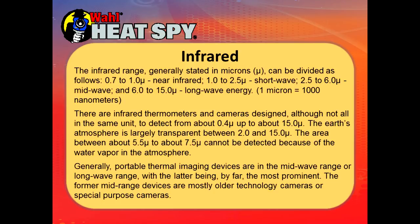Infrared energy is generally stated in microns, which can be divided as follows: 0.7 up to 1.0 microns is what's called near-infrared; 1 to 2.5 is shortwave; 2.5 to about 6 is midwave; and 6.0 to 15 is longwave. Again, one micron is a thousand nanometers, or one millionth of a meter.